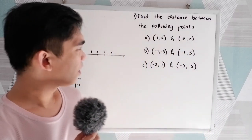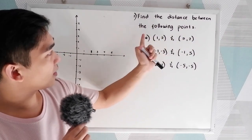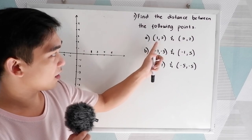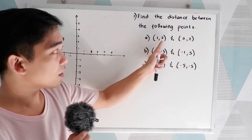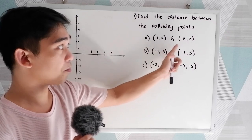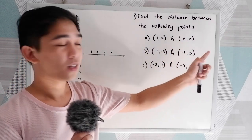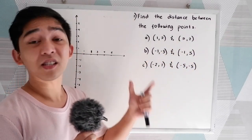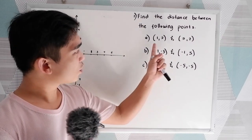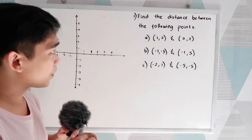Let's say we have the following problem: find the distance between the following points. Letter A: (1, 2) and (5, 2). So let's plot the following points. Letter A is (1, 2).